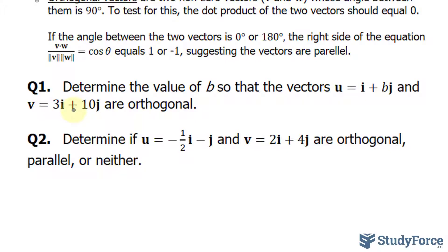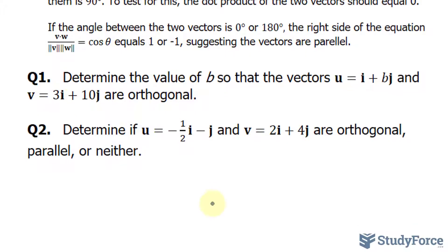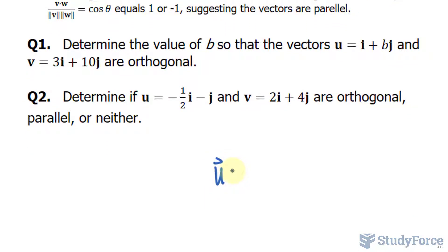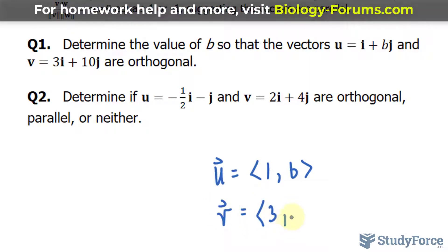Notice that these two vectors are written in terms of I and J. Let me rewrite them so that they're in a simplified form as 1 and B. In addition, V has the components 3 and 10.